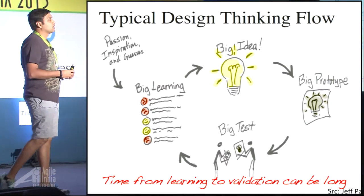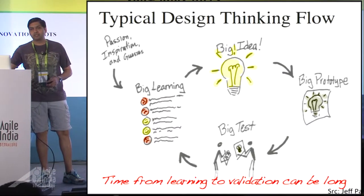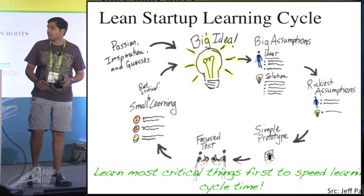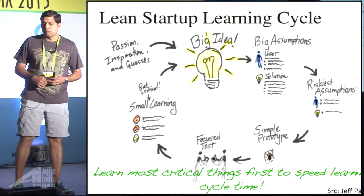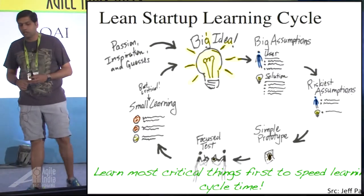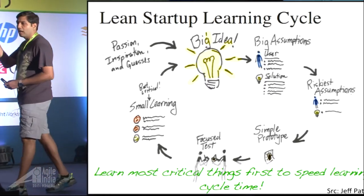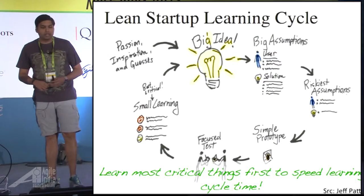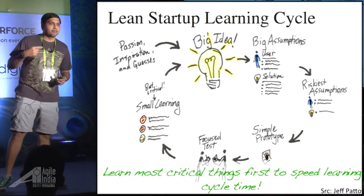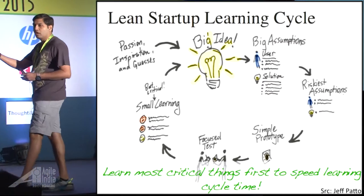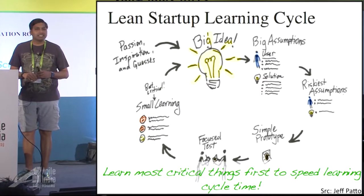If you were to simplify it, that's what a design thinking flow would look like. Now, comparing this with the lean startup flow — it's slightly different in the sense that you have a big idea and you highlight all the riskiest assumptions. Out of those, you pick the most important assumption to validate, build a simple prototype or technique to validate that hypothesis, then go through focused tests to build learning and iterate by refining your idea — possibly pivoting or persevering forward. That's the comparison between design thinking and the lean startup MVP approach.